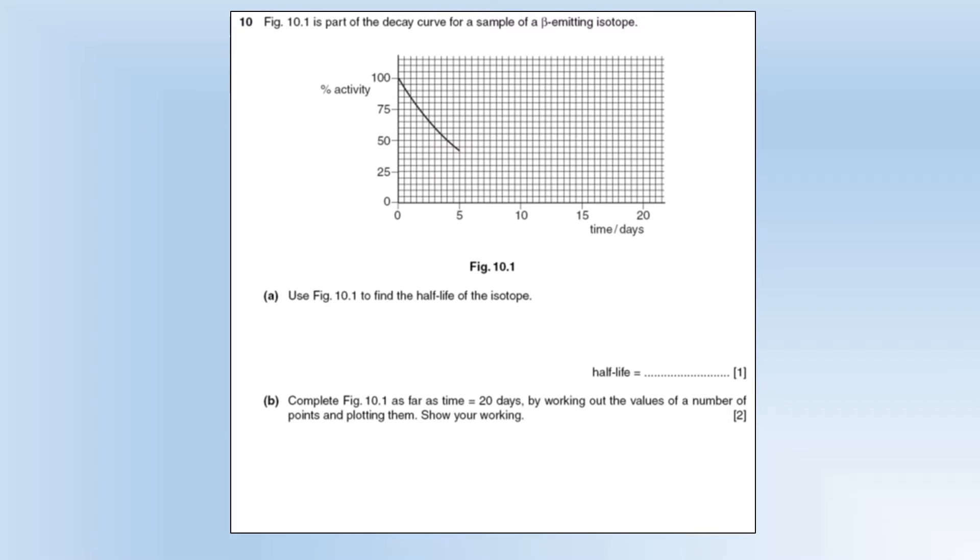So we've got a decay curve for a beta-emitting isotope. Use the diagram to find the half-life of the isotope. So half-life is the time for the activity to halve,